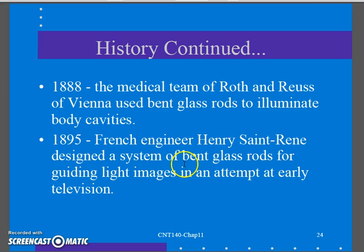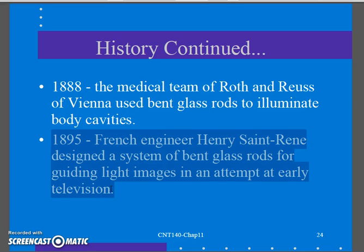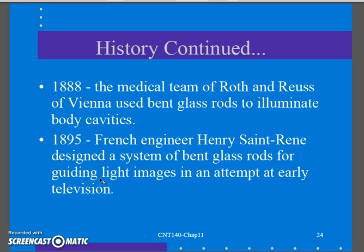In 1895, a French engineer used bent glass rods for guiding light images in an early attempt at television. Think of every pixel on your screen — think of an older, more pixelated TV. Every pixel is almost like a little piece of fiber optic. So you could have a camera with thousands of fiber optics aimed at a picture, those fiber optic lines connecting over to a screen where every piece of fiber optic is a pixel. That was his idea of transmitting images as an early form of television — experimenting with transmitting images using fiber optics.